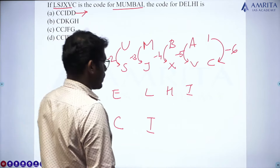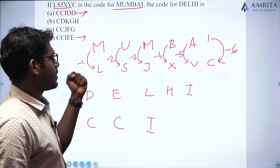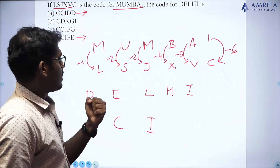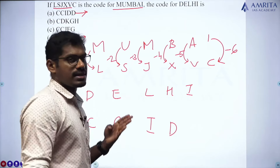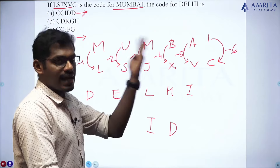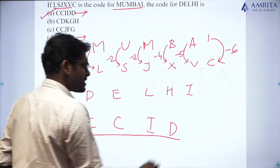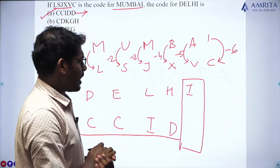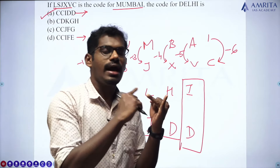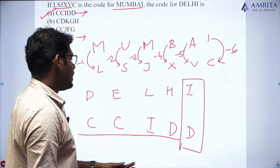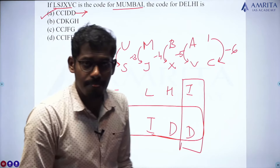For H minus 4: D, E, F, G, H — so H minus 4 is D. And for I minus 5: D, E, F, G, H, I — so I minus 5 is D. Therefore the code for Delhi is C, C, I, D, D. The answer for this question is option A. Simple question.